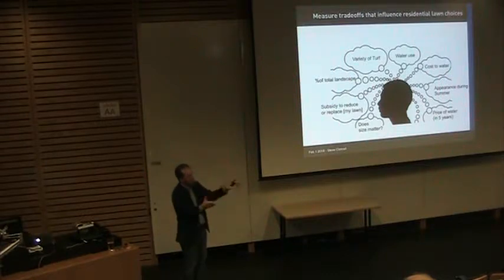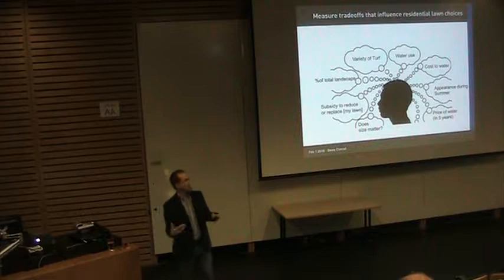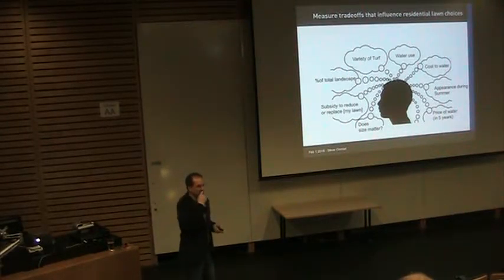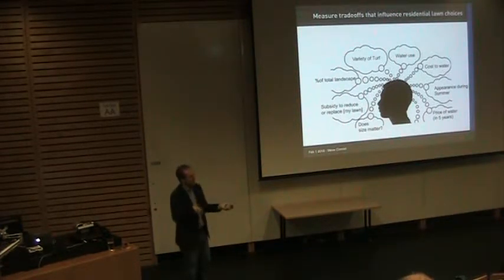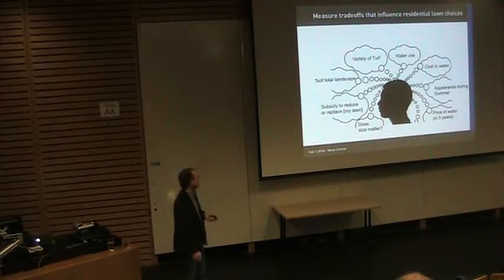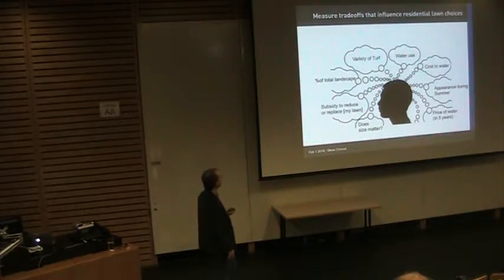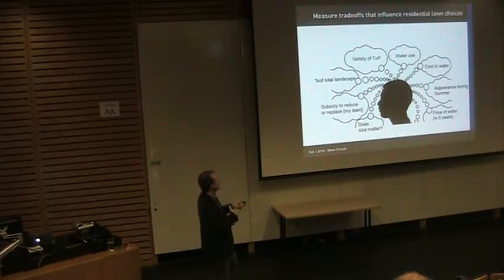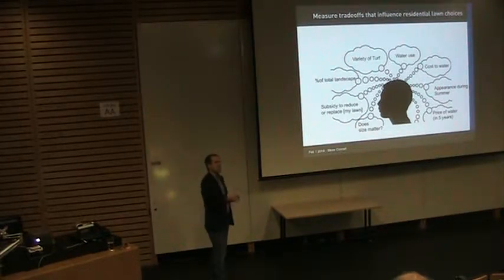Turning to residential lawns — that 25% of water use — here's a snapshot of what an individual considers when thinking about their lawn. In Kelowna there are about 27,000 lawns. What do people care about? The type of turf — Kentucky bluegrass or artificial? How much does it cost to water? What does it look like in summer — brown or green? How much of the landscape is lawn versus other features? These are the key features we thought important to the decision.